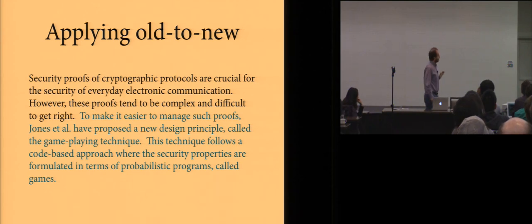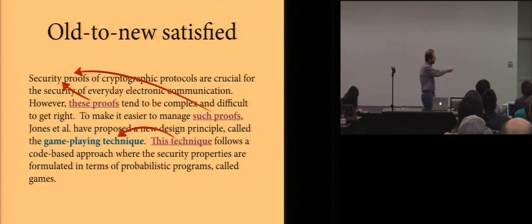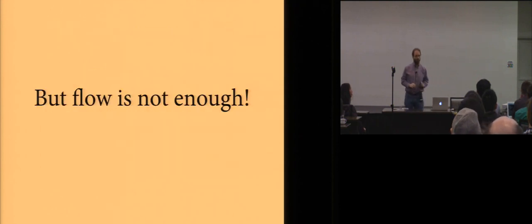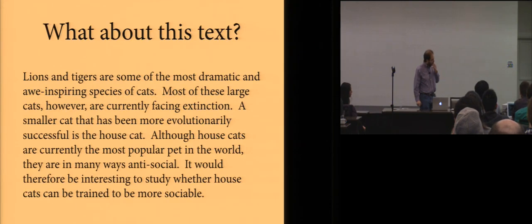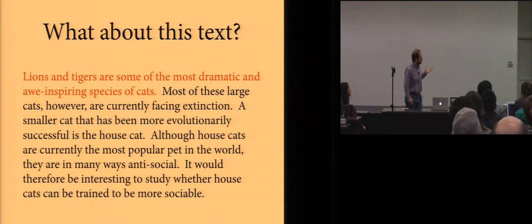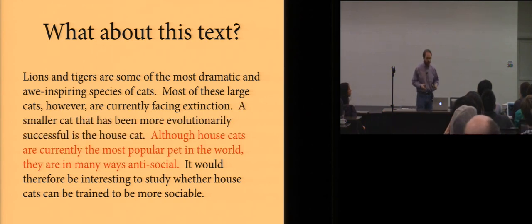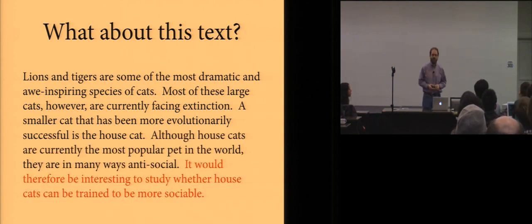So, here, we could change this to say, to make it easier to manage such proofs, Jones et al have proposed a new design principle called the game playing technique. This technique follows a code-based approach where blah, blah, blah. And then you can check that this actually satisfies old to new, by seeing that the beginning of each of the sentences refers to these proofs, such proofs, this technique. It's always referring to old information. So, this is a very useful principle. I apply this all the time in my own writing. But it's not sufficient. Flow is not enough. And to illustrate that, let's look at another paragraph.